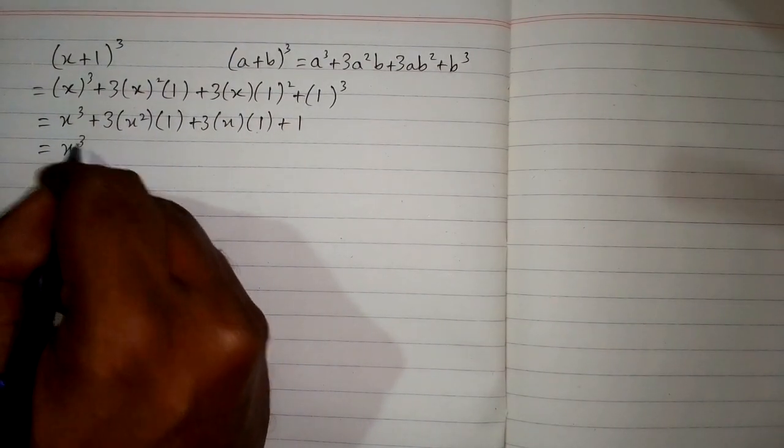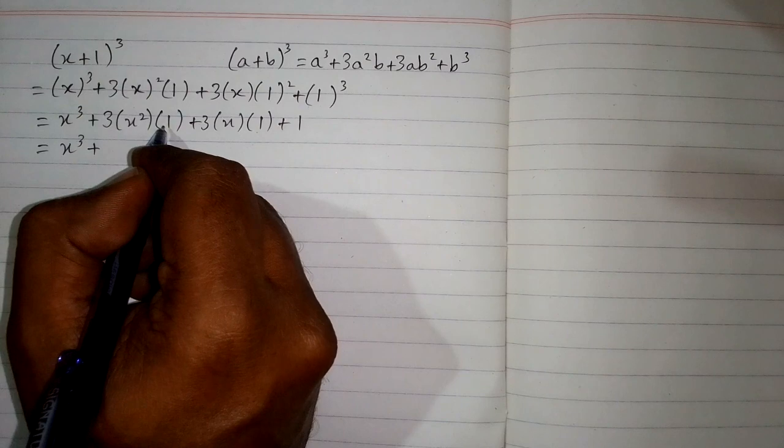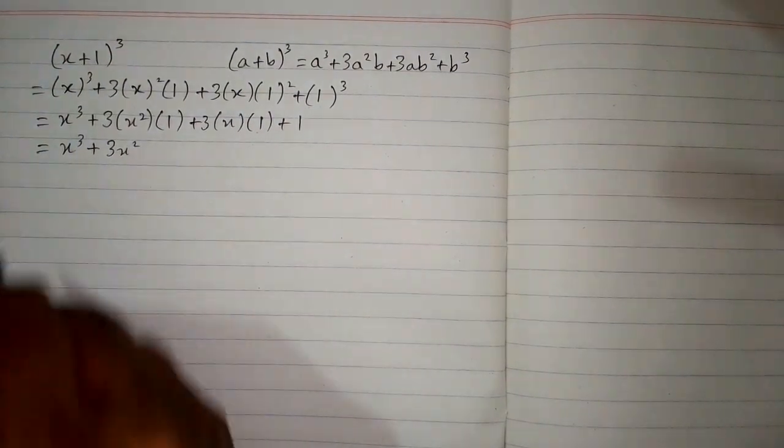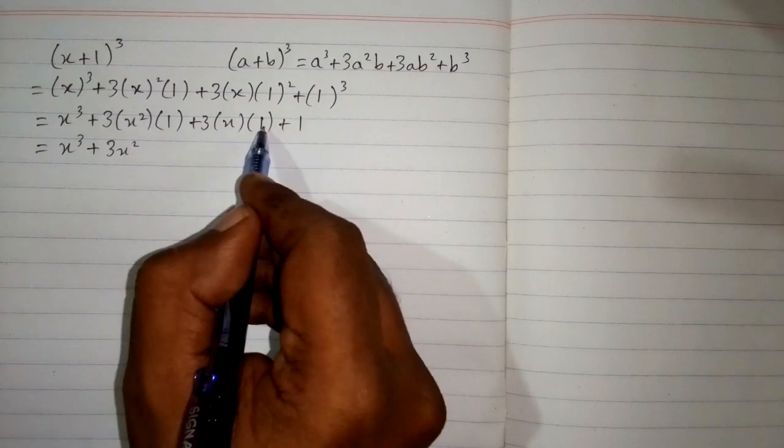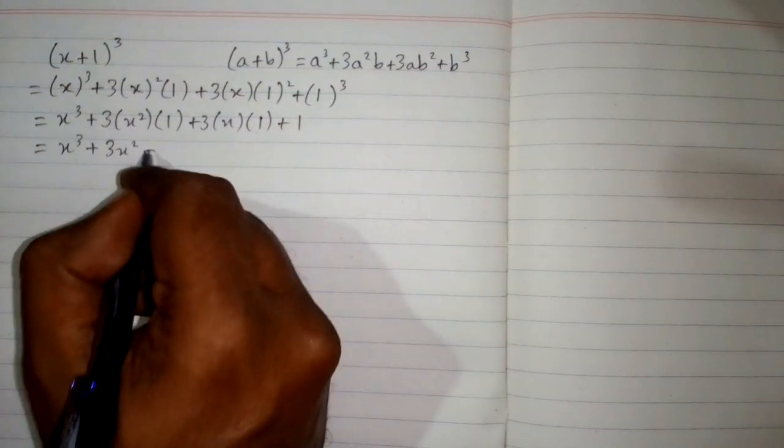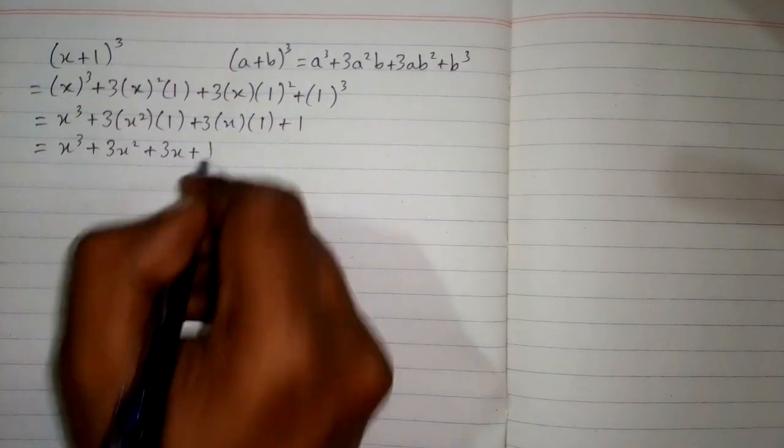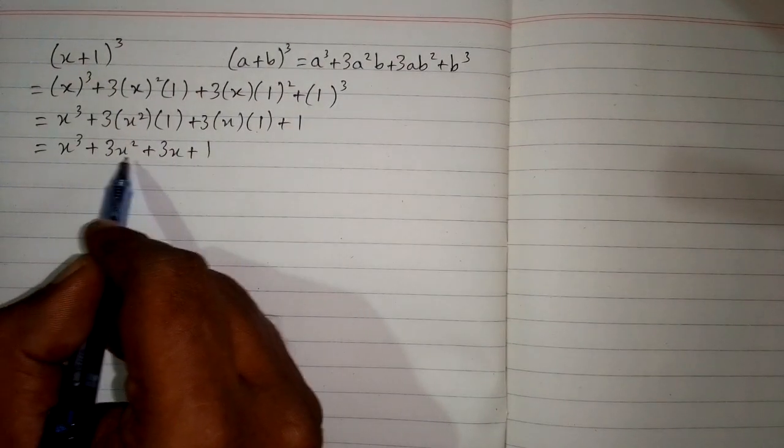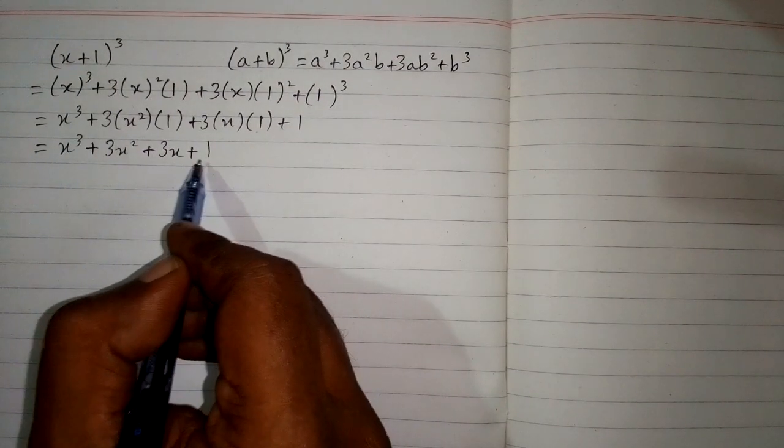Now we will write x³ + 3 times 1 is 3, and 3 times x² is 3x², and 3 times 1 is 3, and 3 times x is 3x, and then plus 1. So (x + 1)³ = x³ + 3x² + 3x + 1.